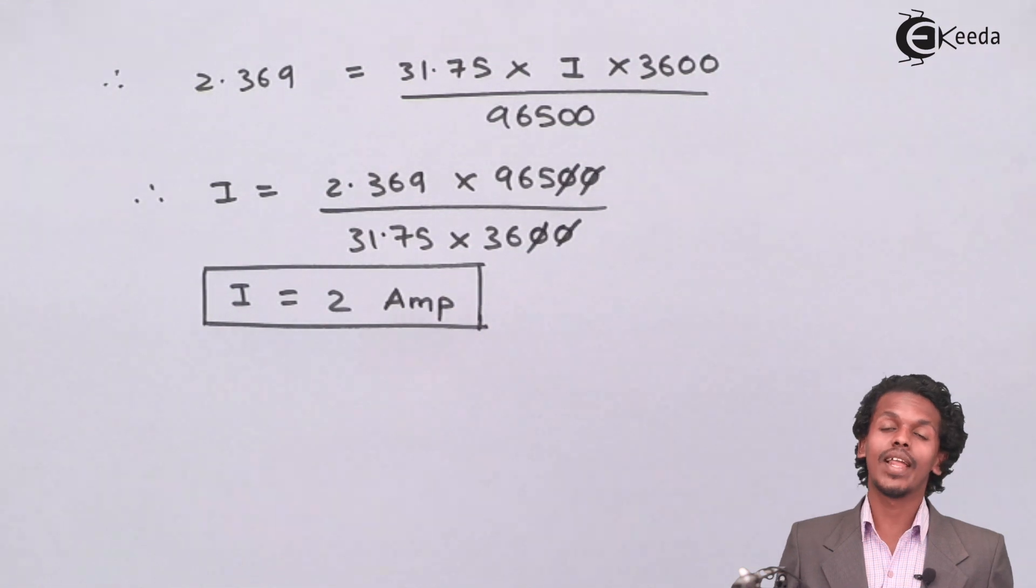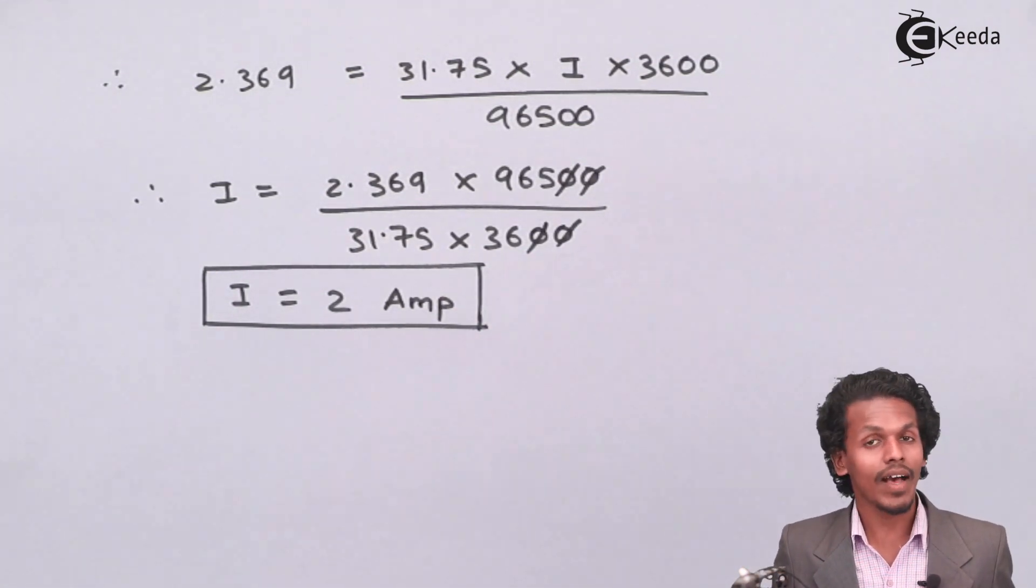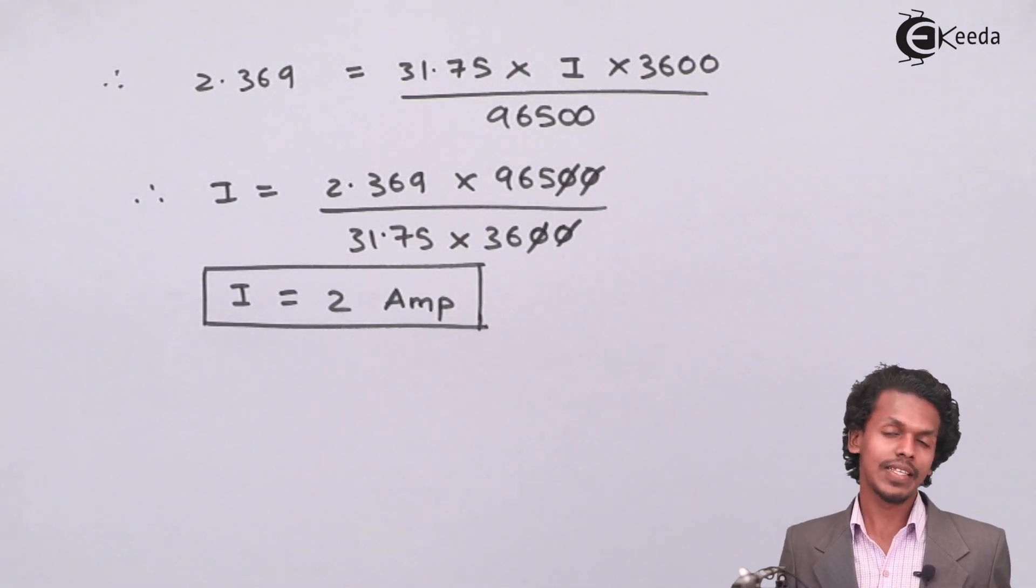So this is how we have got the value of current. But the next question is also remaining: they have asked how many moles of electrons would be required in this reaction.